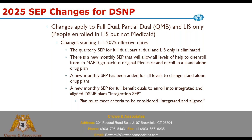There is a new monthly SEP that will allow all levels of help — doesn't matter what you are, full dual, LIS, whatever — to disenroll from any MAPD plan and go back to original Medicare and enroll in a standalone drug plan. That is it — it's a one-way only. Additionally, there's a new monthly SEP for all levels to change standalone drug plans; people with any level of help can change standalone drug plans every single month.